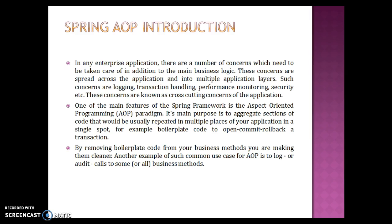performance monitoring, security, and implementing caching. These concerns are known as cross-cutting concerns of the application. One of the main features of the Spring framework is the Aspect Oriented Programming paradigm. Its main purpose is to aggregate sections of code that would usually be repeated in multiple places of your application, for example boilerplate code to open, commit, or rollback transactions, or implementing caching or security mechanisms. By removing boilerplate code from business methods you are making them cleaner. Another example of such common use cases of AOP is the logger or audit calls to some or all business methods.